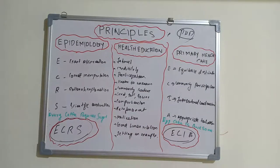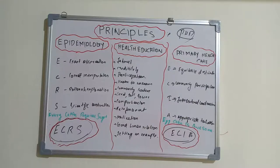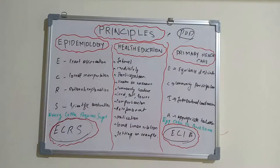Now let's look at the principles of primary health care. Primary health care is a different concept where health is provided at the grassroots level or at the doorsteps of people. It was started with the 1978 Alma-Ata conference. Large countries like India follow this concept because providing health care at the nearest accessible point is far better than creating many medical colleges and tertiary level health centers.